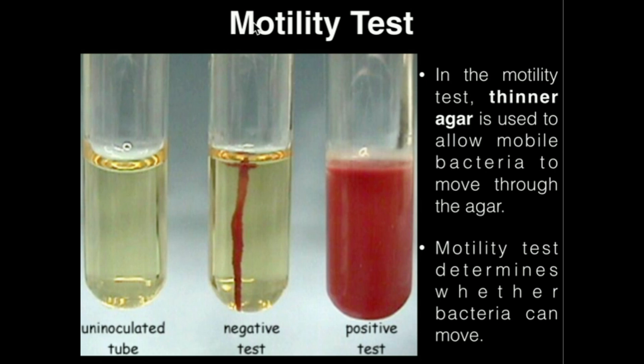Typically, most agars that we use have an agar concentration of about 1.5%. This concentration is enough to prevent the movement of most bacteria. In the motility test, we want to allow mobile bacteria to actually be able to move, so we're going to use a much thinner agar concentration — only about 0.4% agar — which is thin enough to allow bacteria to actually move.